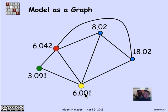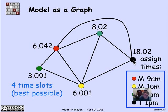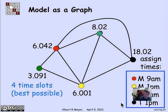Let's try coloring the exam scheduling graph. There's a triangle, so three different colors are needed. Reusing colors economically where possible, we eventually reach a vertex adjacent to three different color vertices, requiring a fourth color. It turns out four colors are best possible here. The resulting schedule assigns 6042 to Monday 9 AM, 6001 to Monday 1 PM, 802 and 3091 can both be scheduled Tuesday 9 AM, and 1802 on Tuesday at 1 PM.